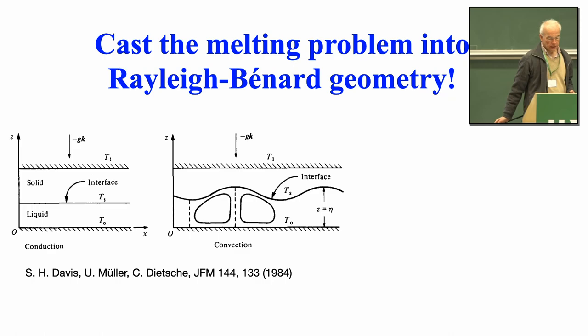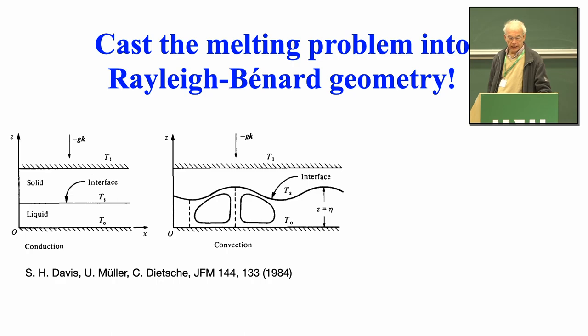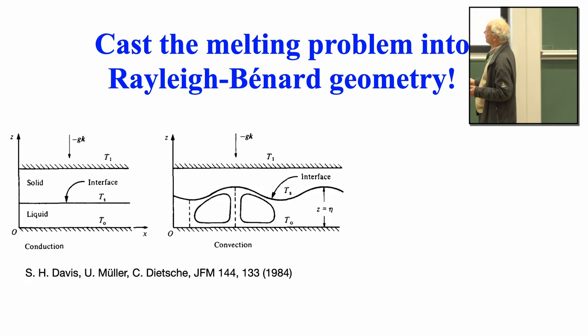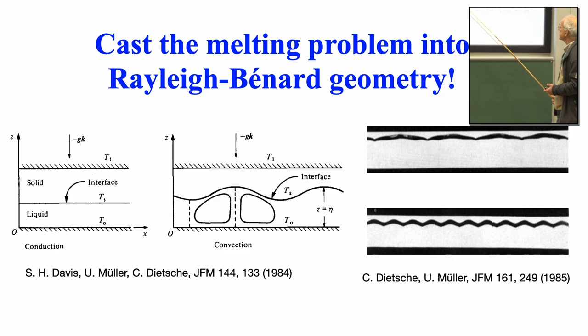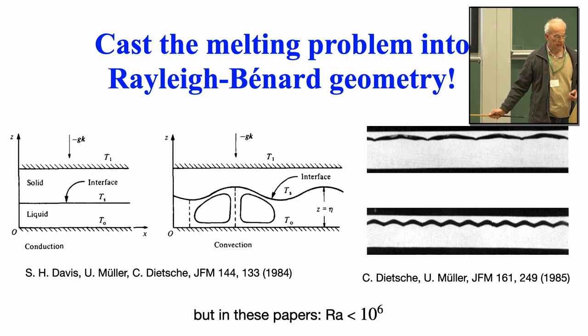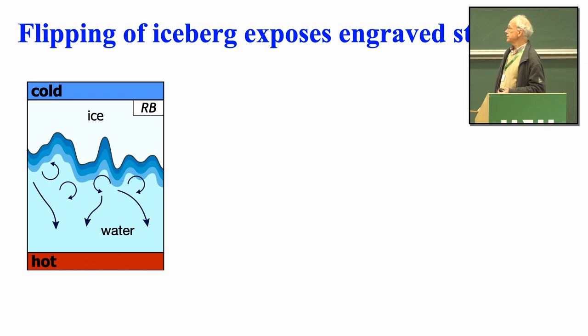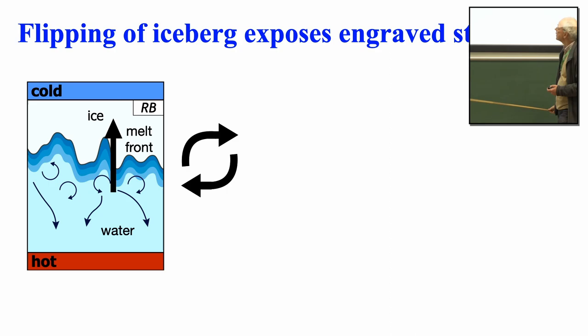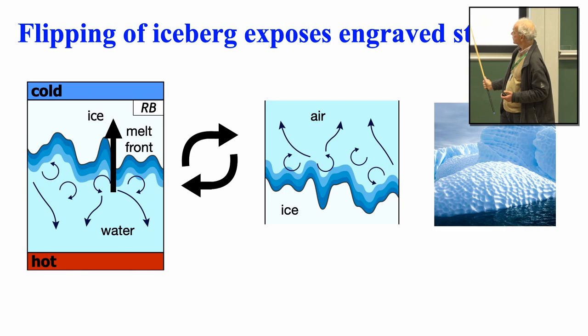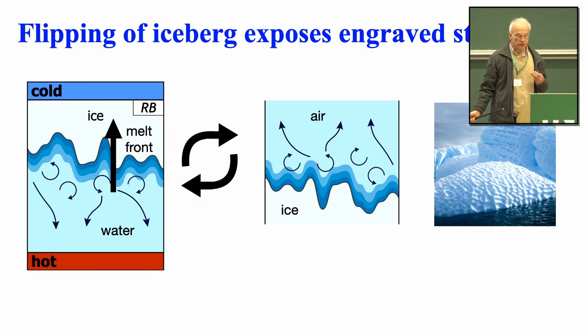Let's cast the melting problem into Rayleigh-Bénard, which was done by Steve Davis and co-workers back in 1984. You have ice and liquid, and by heating it you melt the ice, generating these structures. They were limited to very small Rayleigh numbers — around 10 to the 6. The melting causes structures at the bottom and into the ice. The ice melts from the bottom, at some point the iceberg turns over, and the origin of these surface structures is actually the underwater melting of the ice.